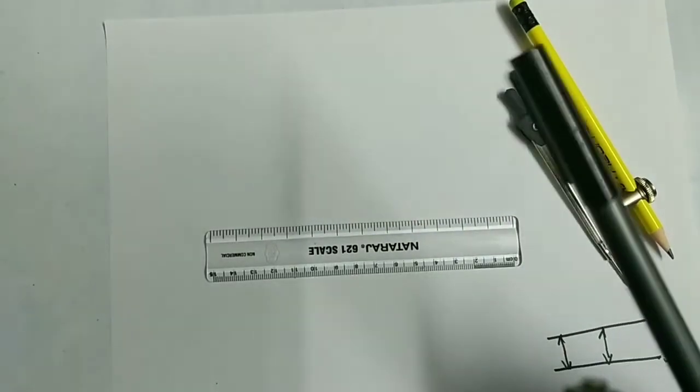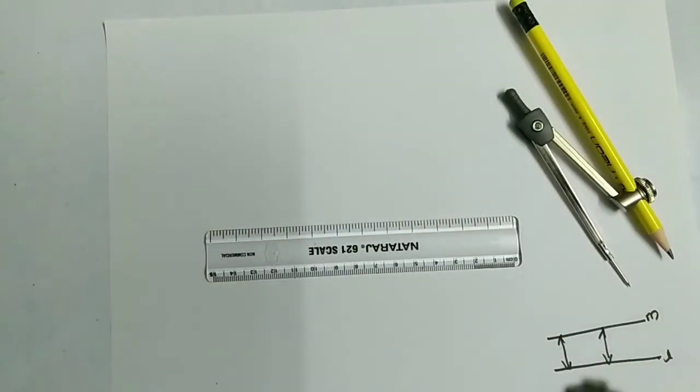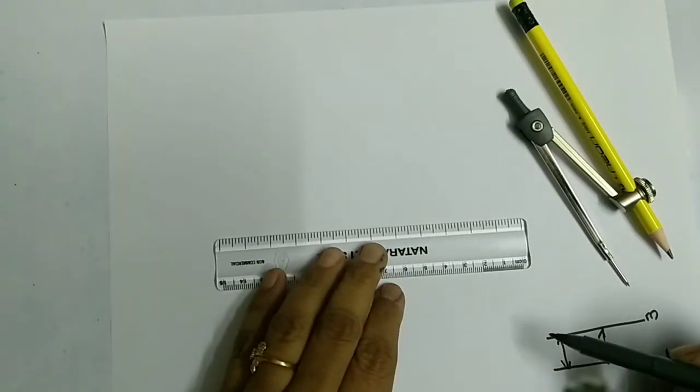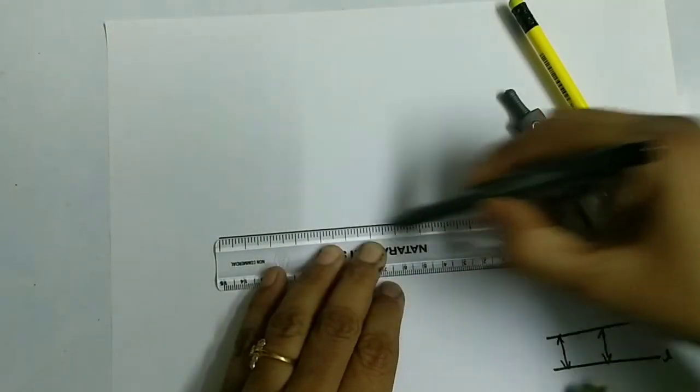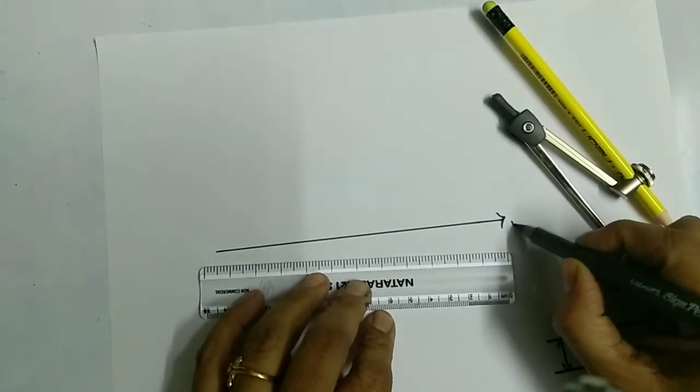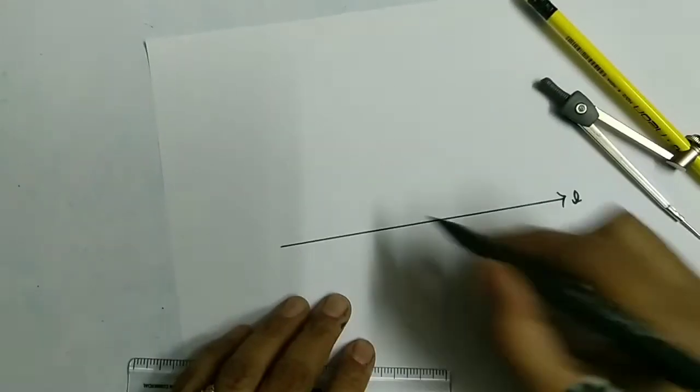For that, just draw any given line and I'm going to call it line l. On this line, I'm going to make one point here and call it as A.